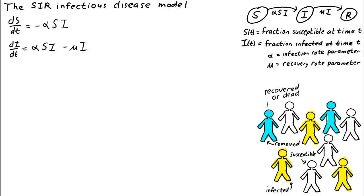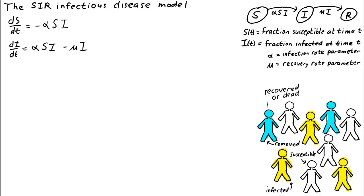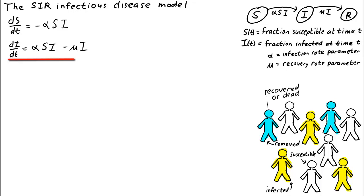We don't need to keep track of removed individuals, so our model has only two state variables. S is the fraction of susceptible individuals and I is the fraction of infected individuals at time t. The dynamics are described by two coupled differential equations. The change in susceptibles is ds/dt equals minus alpha times s times i, where alpha is the infection rate parameter. The change in infecteds is dI/dt equals alpha times s times i minus mu times i. The first term reflects susceptibles who got sick joining the infected class; the second term represents the rate at which infected individuals are removed, either by dying or recovering and becoming immune.